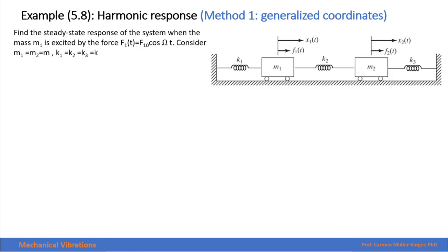In this example, we want to find the steady-state response of a system when mass 1 is excited by a force F1, which is equal to F10 cosine of omega t. We will consider that both masses have the same magnitude m, and the three springs are equal and have a spring constant of 2k.